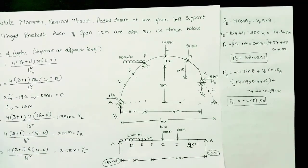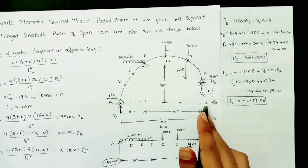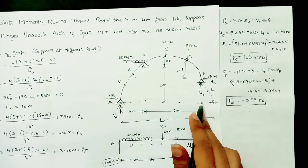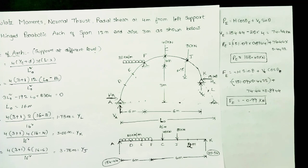With this, we have calculated the moments, normal thrust, and radial shear at 4 meters from the left support. This is the procedure for analyzing a three-hinged parabolic arch with supports at different levels, compared to the previous video which covered supports at the same level.